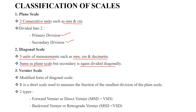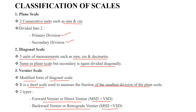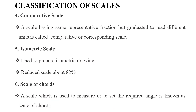The next type is the Vernier scale, which is a modified version of the diagonal scale. It uses small divisions for precise measurement. The Vernier scale is classified into forward Vernier (direct Vernier), where the main scale division is greater than the Vernier scale division, and backward Vernier (retrograde Vernier), where the main scale division is less than the Vernier scale division.